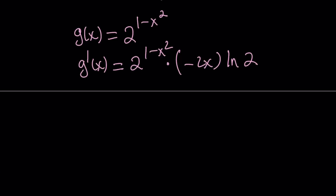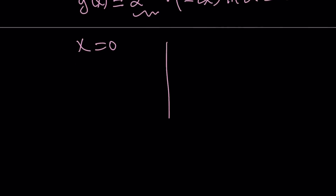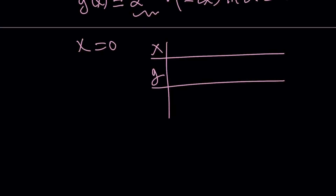Set this equal to 0. Since 2 to the power 1 minus x squared can't be 0 and ln 2 is positive (greater than 1), x must be 0. So x equals 0 is our critical point, and we should hopefully have a max or a min there. Let's check the table: if x is greater than 0, the first derivative is negative; otherwise it is positive.